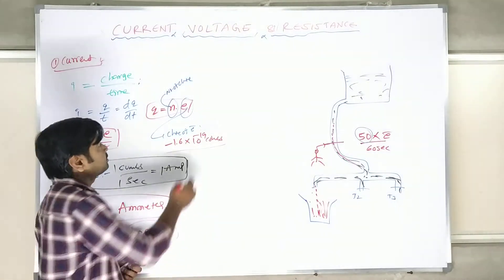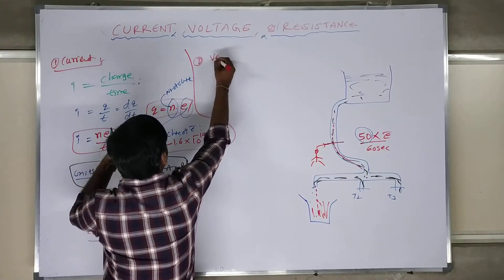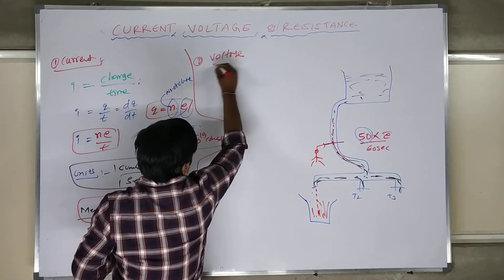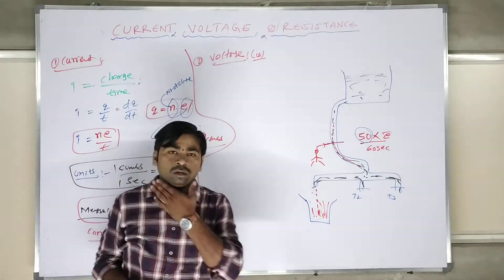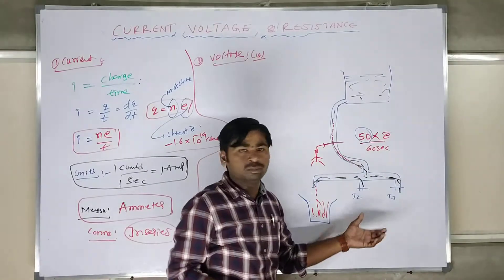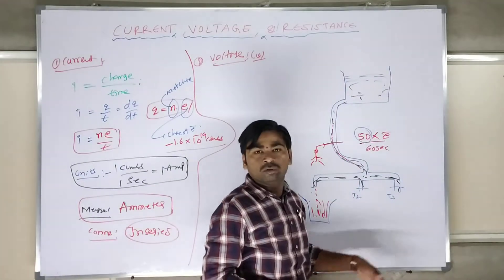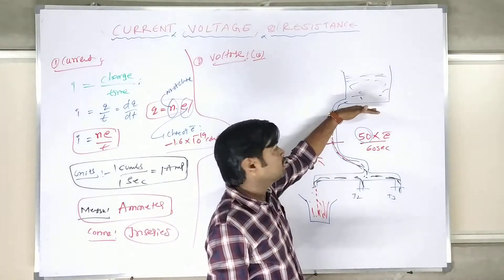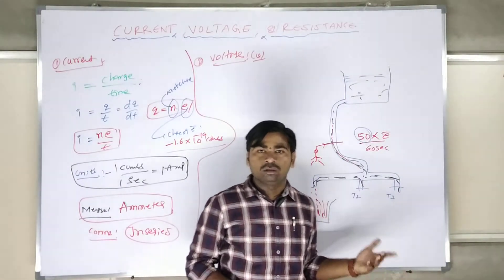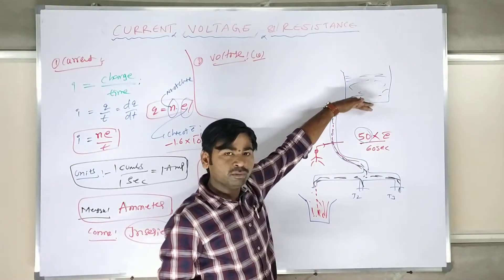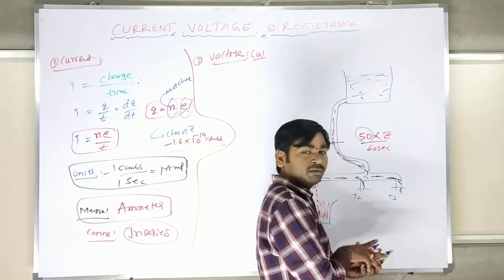The next topic is voltage. Voltage is nothing but — coming back to the water tank example — if your water tank is on the top floor, water will come down to the lower floor. But if the tank is on the same floor, the water will not flow easily, because some pressure is needed to push the water from one place to another.